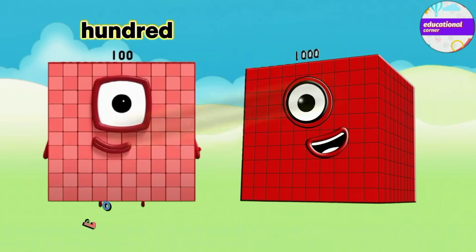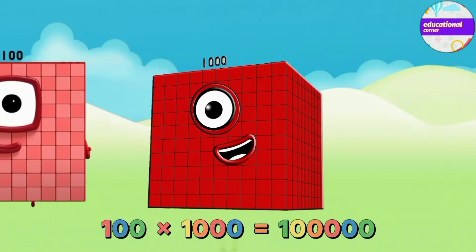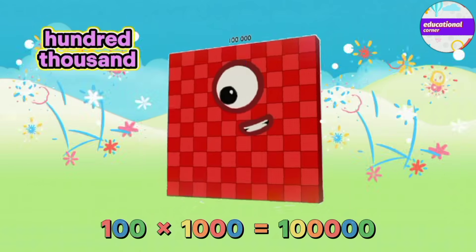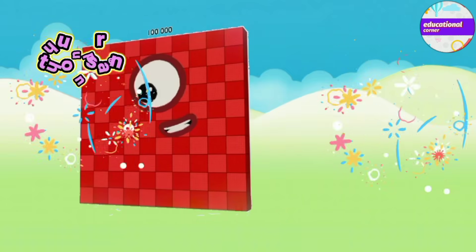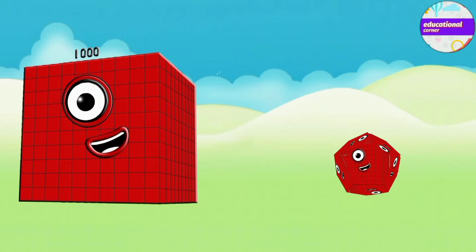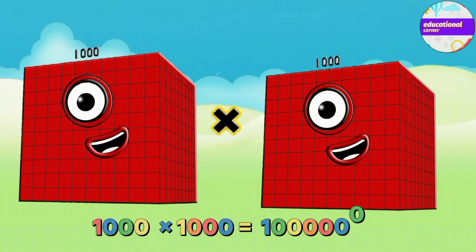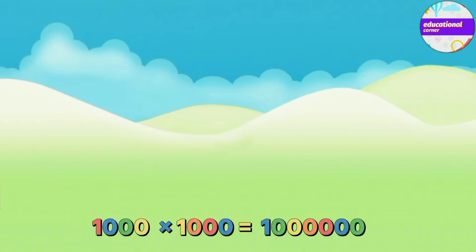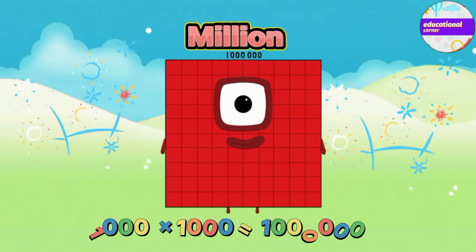Hundred multiply by thousand equals hundred thousand. Thousand multiply by thousand equals million.